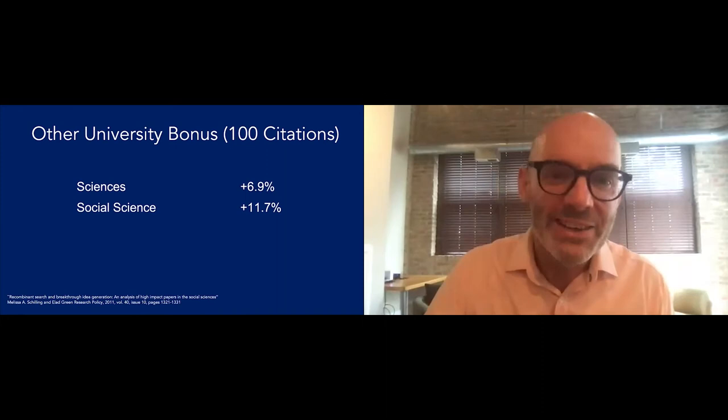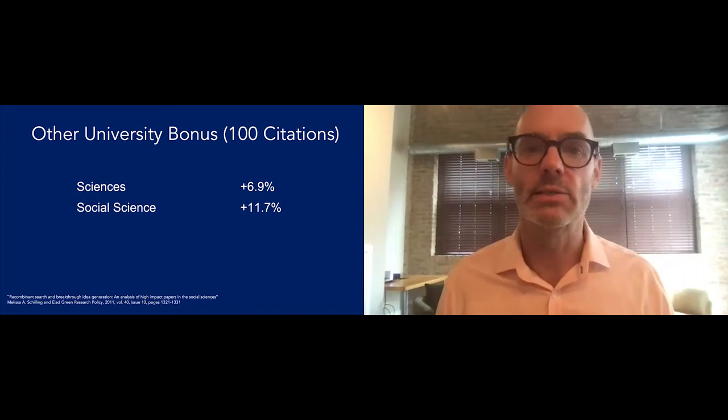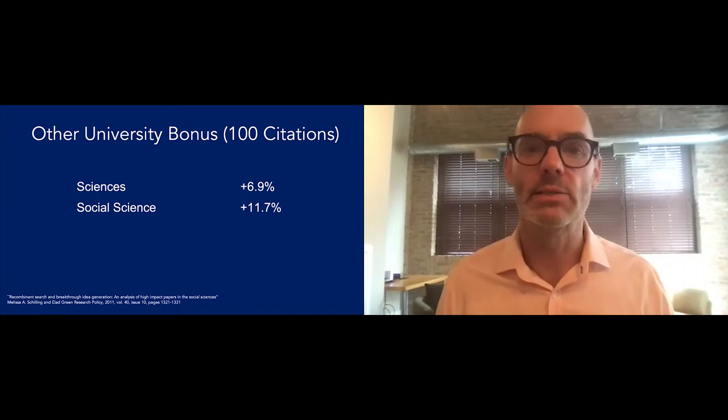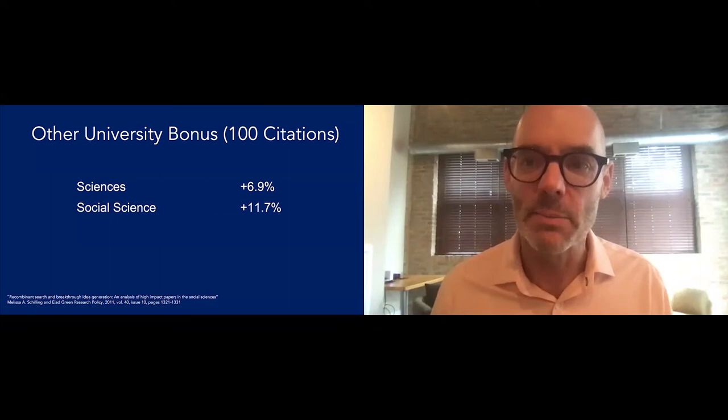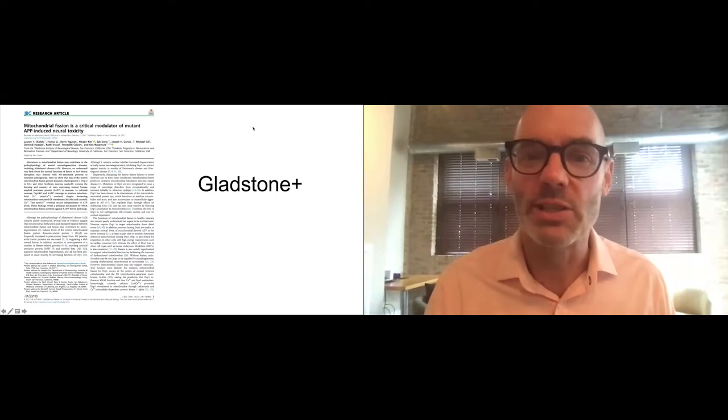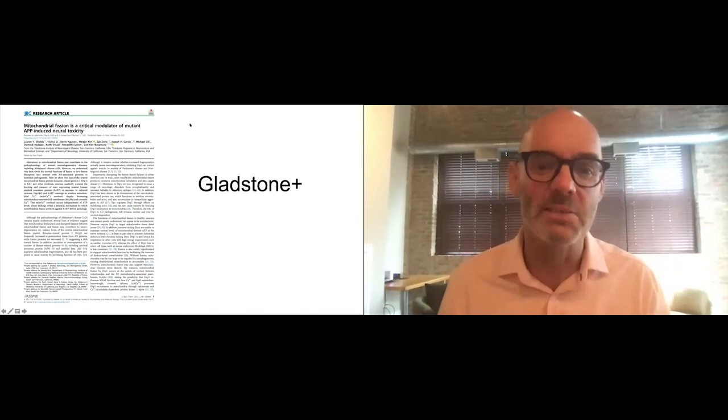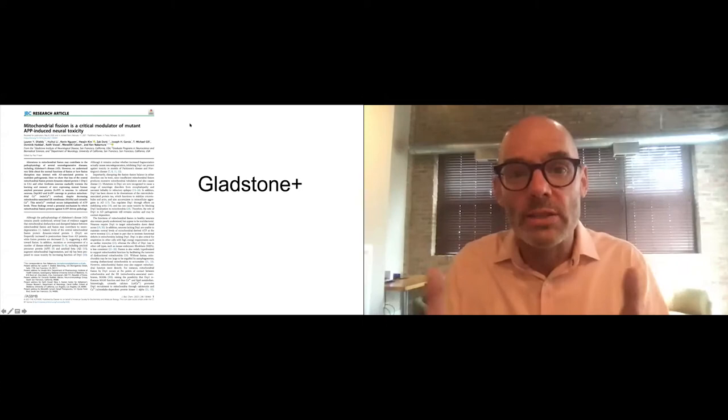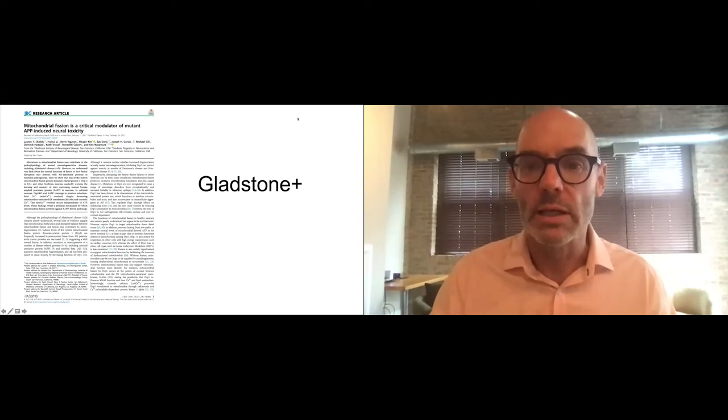When you look again at these papers with a hundred citations, one of the things that comes out—and this is a fun group to talk to because people are from Texas and Georgia Tech and Washington and Gladstone—hold everything else constant. Adding a co-author and just switching the school. Instead of working with someone from Michigan, I switch and work with someone from Chicago or Texas or Georgia Tech. The odds of me writing one of those papers, holding everything else constant, goes up 12% if I'm writing a social science paper and 7% if I'm writing a science paper. Why is that? Because they just know different stuff. They're reading different things in different journals.